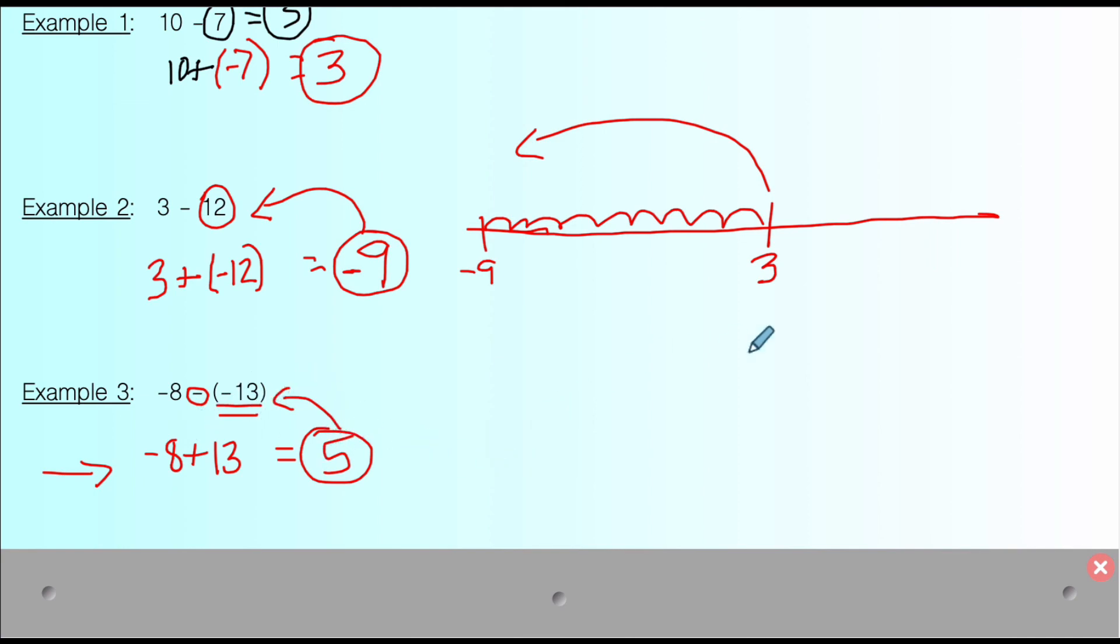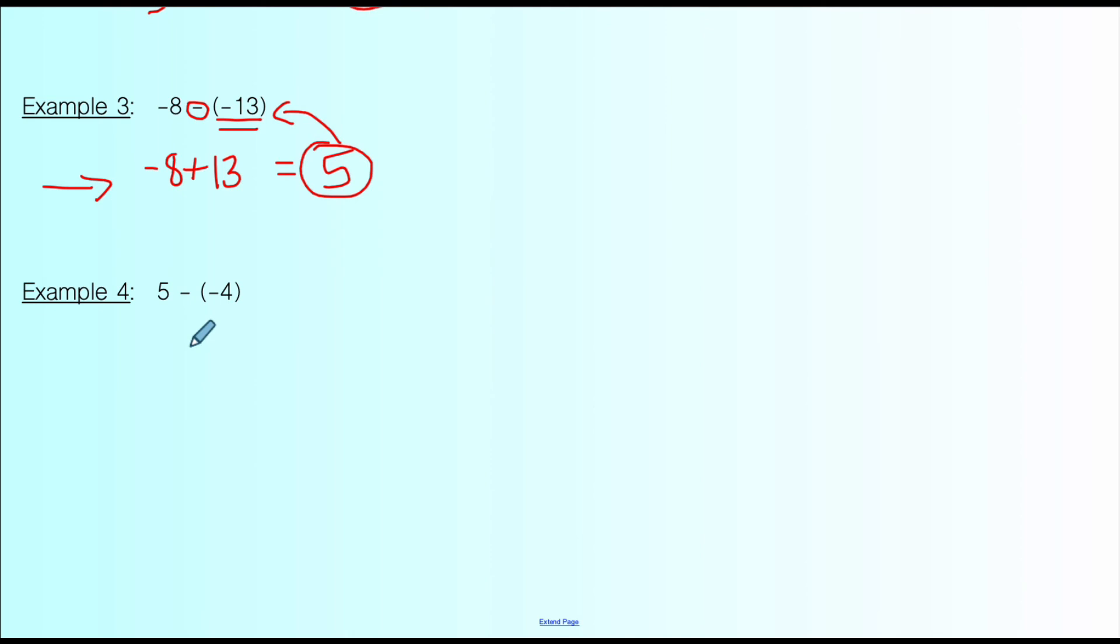That's a weird one, but it's true. And we just proved it by changing the subtraction to add the opposite. Alright. Last example. We've got 5 - (-4). So what does that mean? It means 5, change the subtraction to addition, 5 plus, and then add the opposite. The opposite of -4 is positive 4. That's weird. 5 - (-4) really just means 5 + 4. And 5 + 4 is positive 9. So that means that 5 - (-4) is equal to positive 9.